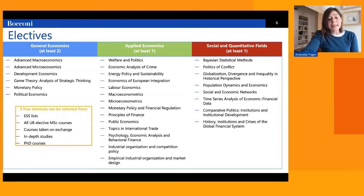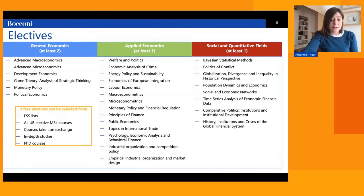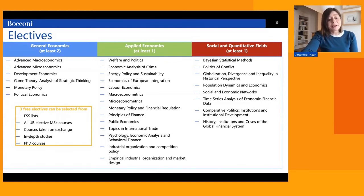The remaining three electives out of the seven are completely free. They can be chosen from the three ESS lists, or from electives offered at Bocconi in other Masters of Science, or among courses offered on exchange if students choose to participate in an exchange program, or among PhD courses.